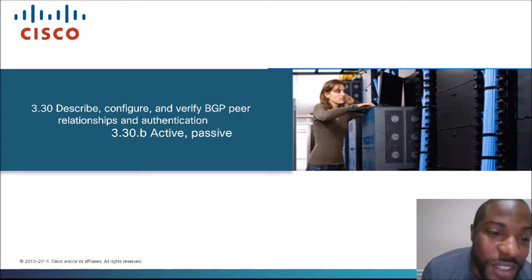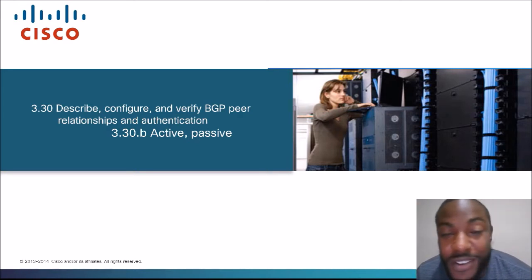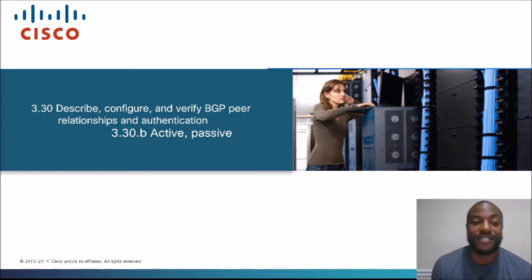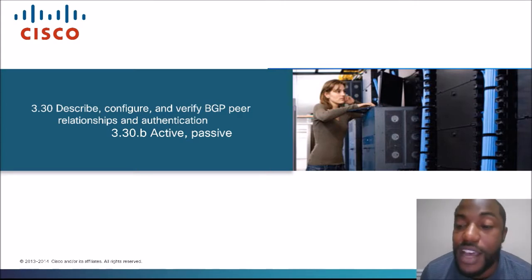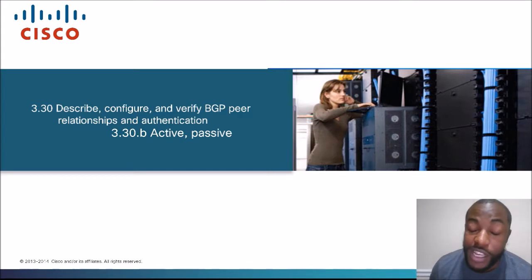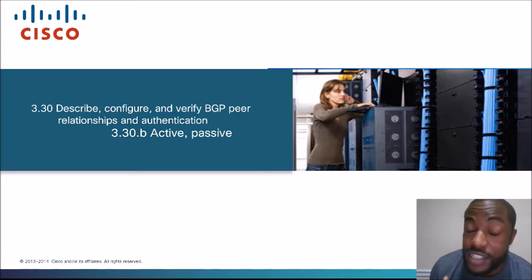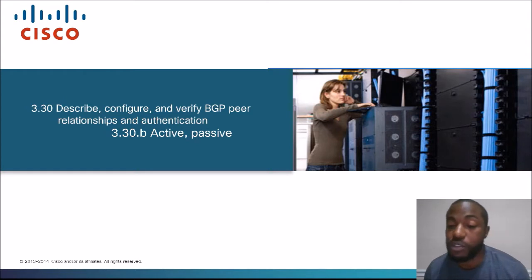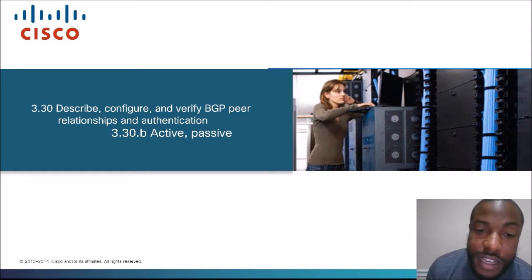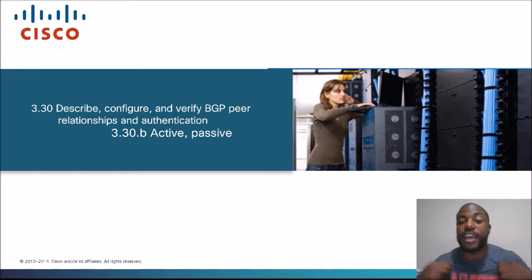Today's topic is Section 3.30B, Active, Passive. This is the subsection in the section Describe, Configure, and Verify BGP Peer Relationships and Authentication. This is the topic in the CCNP Route exam, which will be known as the CCNP Enterprise exam come February 24th, 2020. Let's go ahead and take a look at the exam blueprint and see where we came from and where we're headed.